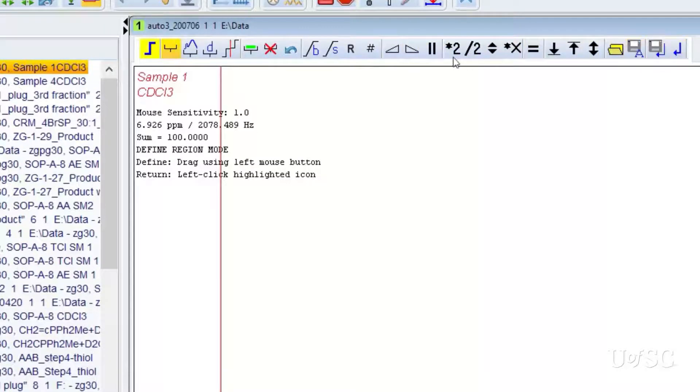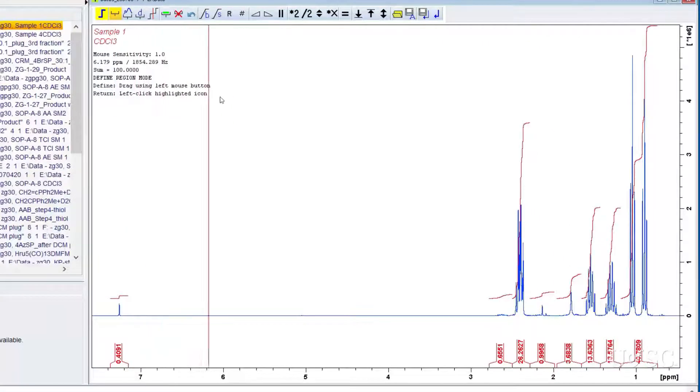Our manual has a full description but we will work with a few here. When you start with manual integration you have a choice to edit the integrals produced by ABS, or remove the current integral regions and start from scratch. The decision depends on the extent of the edits required.